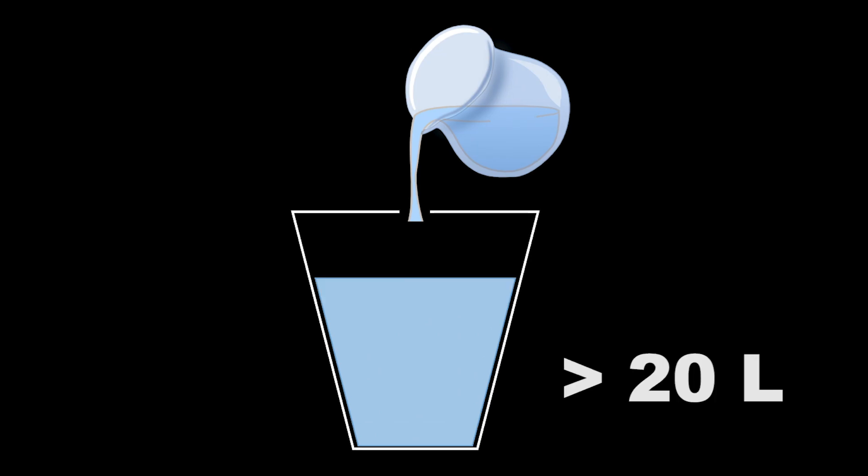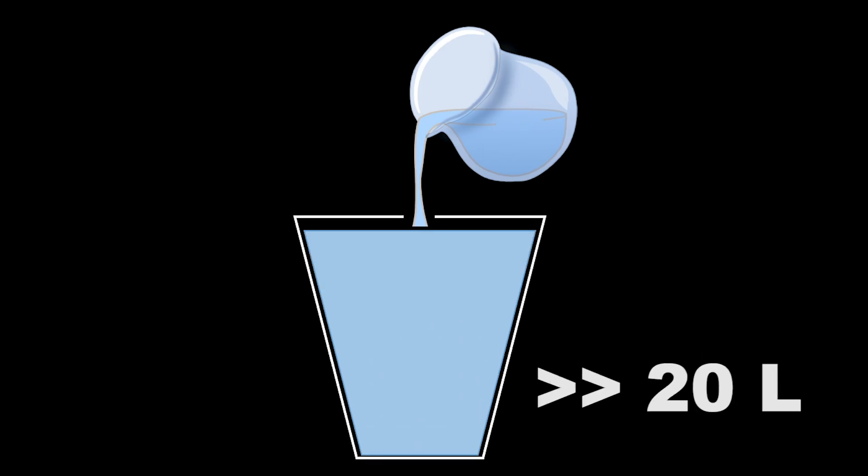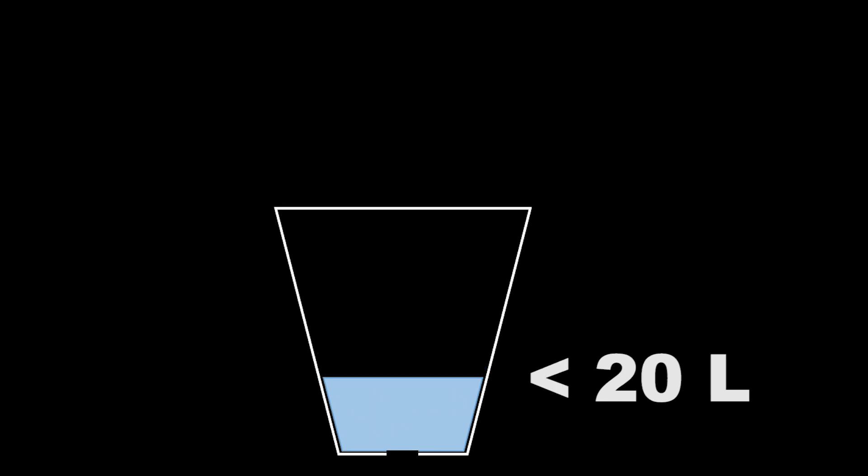So obviously, if we pop a hole in the top of our bucket and then pour water into it, then the amount of water in the bucket will increase. On the other hand, if we poke a hole in the bottom of our bucket and allow water to flow out, then you should obviously expect the amount of water in the bucket to decrease. Things get interesting, however, when we poke holes in both the top and bottom of the bucket and allow water to flow in while water is flowing out.